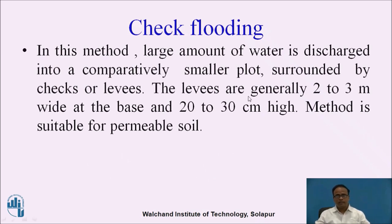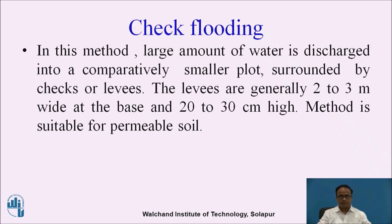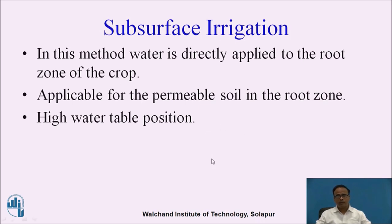In check flooding, a large amount of water is discharged into a comparatively smaller plot surrounded by checks or levees. These levees are generally 2 to 3 meters wide at the base and 20 to 30 centimeters high. Check flooding allows control of water discharge and is applicable for permeable soil. Another method is subsurface irrigation, which is useful when the soil mass is highly permeable and the groundwater table is at a high position.